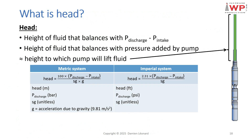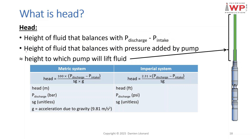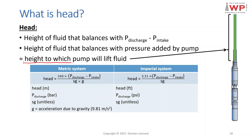The most important curve shows head versus flow rates. Head corresponds to the height of fluid that balances the difference between the pump discharge pressure and the pump intake pressure — in other words, the height of fluid that balances the pressure added by the pump to the fluid, which is approximately the height to which the pump will lift the fluid.